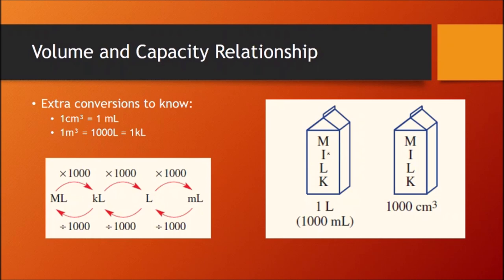So today we're going to quickly just touch on volume and capacity and the relationship they have. So just real quick to know for your work or your tests, extra conversions to know. One centimetre cube equals one millilitre. One metre cubed is the same as writing a thousand litres or one kilolitre. So here I've just got an image. Alright. So we had two cartons of milk and we said this was one litre. We know that one litre equals a thousand millilitres and the ratio between millilitre to centimetre is a one-to-one ratio.